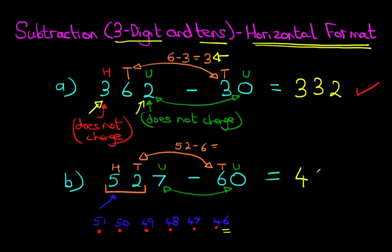So therefore, we can write this down, four and the six. And don't forget the units over here. The units does not change. So therefore, 527 minus 60 equals 467. So that is the subtraction of a three digit number and tens using the horizontal format.